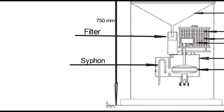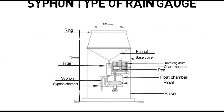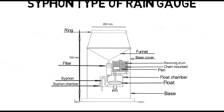At the bottom, the box is connected to a siphon. The siphon comes into action and releases the water as soon as the box is filled to a certain level. Figure shows complete arrangement. It is also called natural siphon type recording rain gauge.